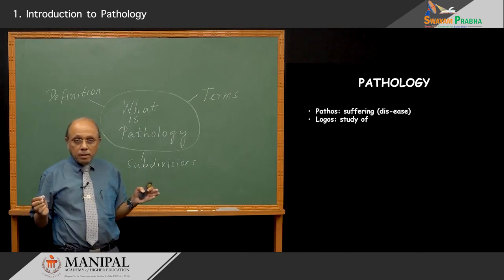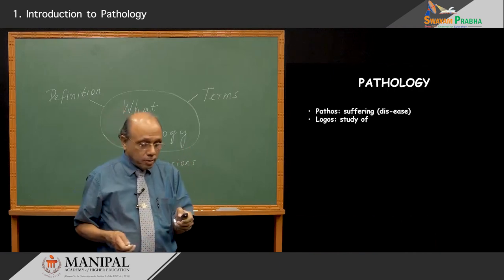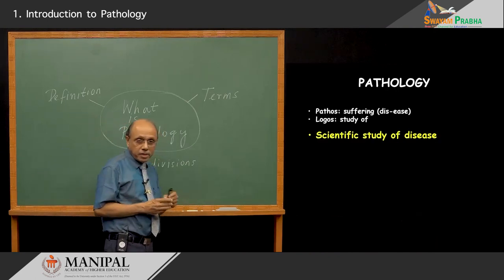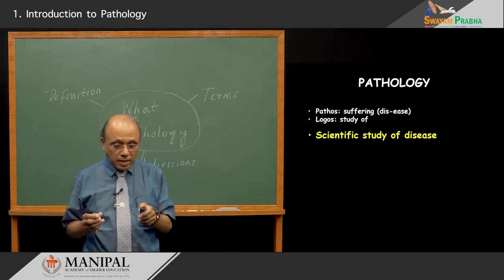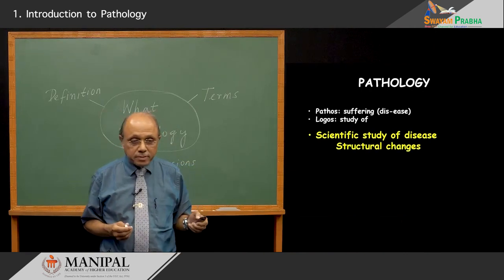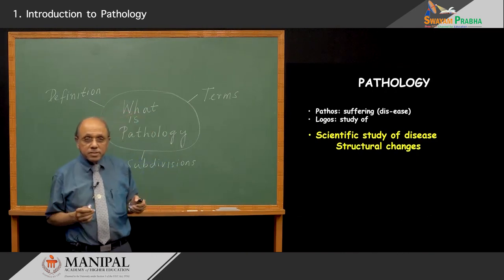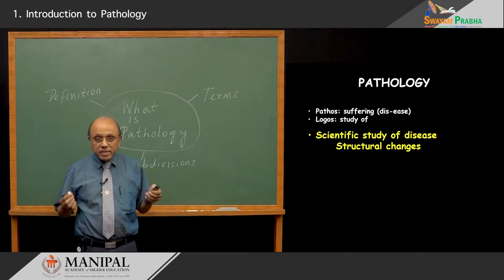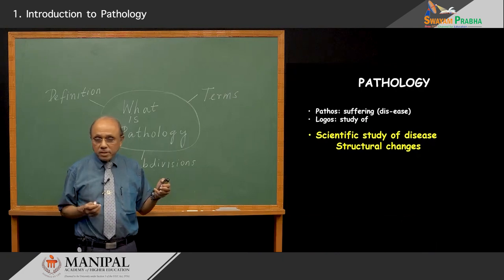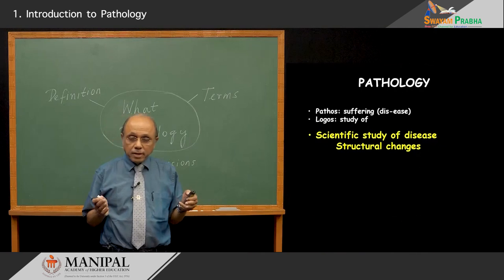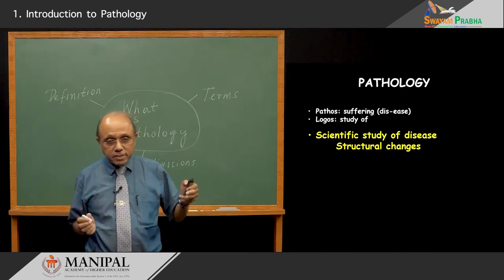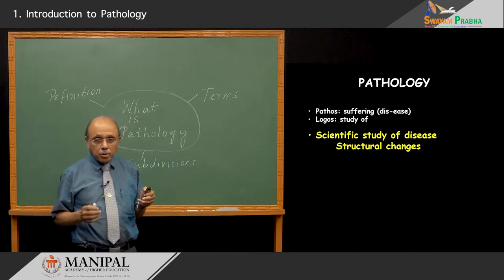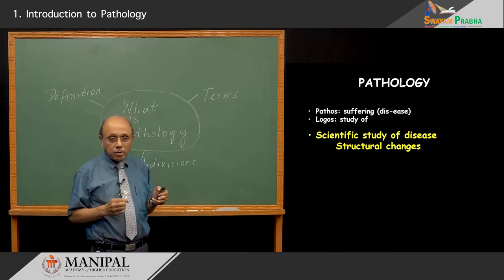Now, this is a very broad definition, but more specifically, when we look at pathology, it is a scientific approach to the study of disease. And what does that mean? Scientific approach means structural changes — what structural changes can happen in organs when they are diseased? So, that is part of pathology. A large part of pathology involves looking at those changes that happen in the anatomy and physiology. That is, anatomy gone wrong, physiology gone wrong, is pathology.